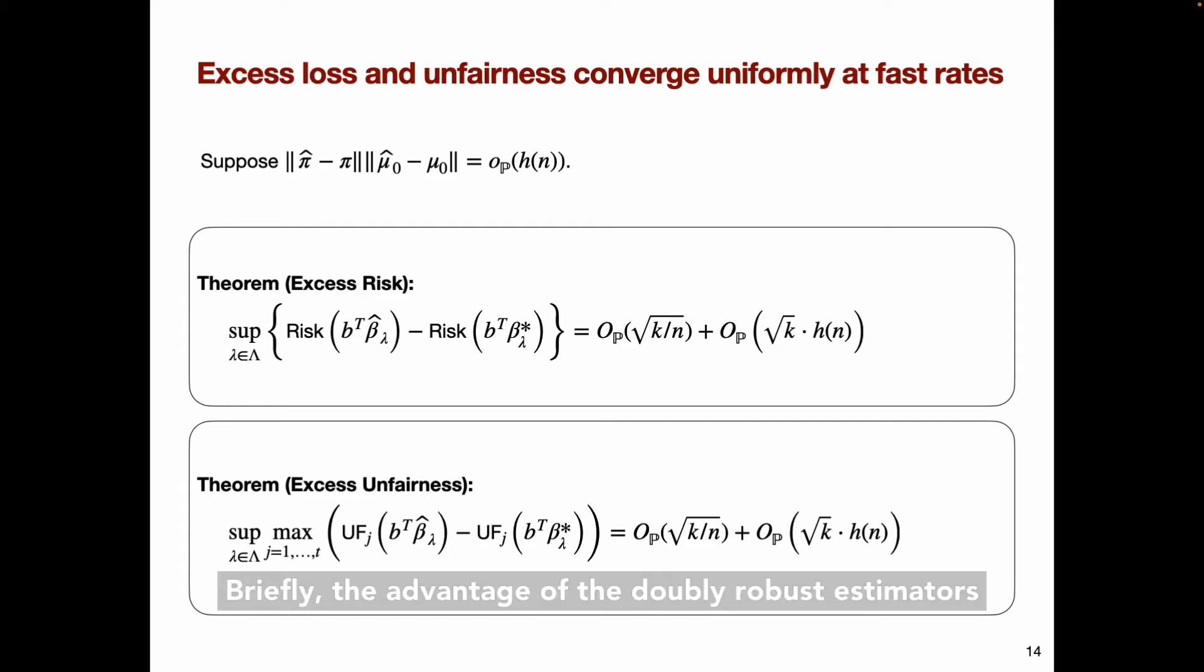Briefly, the advantage of the doubly robust estimators here is that we obtain fast convergence up to root n rates without imposing any parametric assumptions on our data generating process. I'm not formally defining the excess risk or excess unfairness, but roughly this means that the risk and unfairness of our ensemble predictor converges to the optimum at fast rates, and this convergence is uniform over the set of possible penalty vectors, capital lambda.